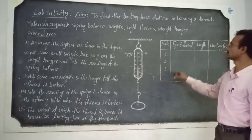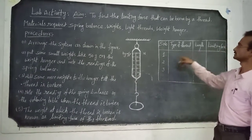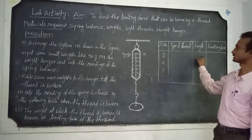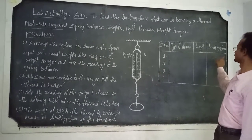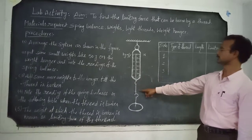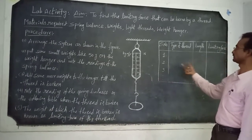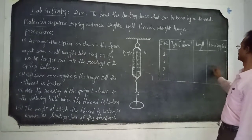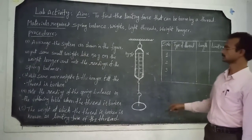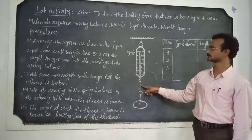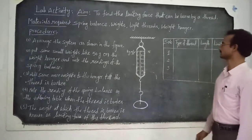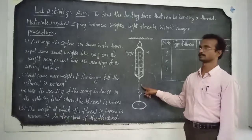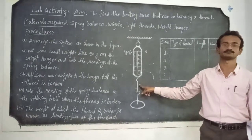All the readings have to be recorded in tabular form. For each type of thread, record the length of the thread and the weight at which the thread broke. Similarly, for different kinds of threads of the same length, record these values of weight at which the threads broke. In this way, we can find out the limiting force that can be borne by a thread using this lab activity. Thank you.